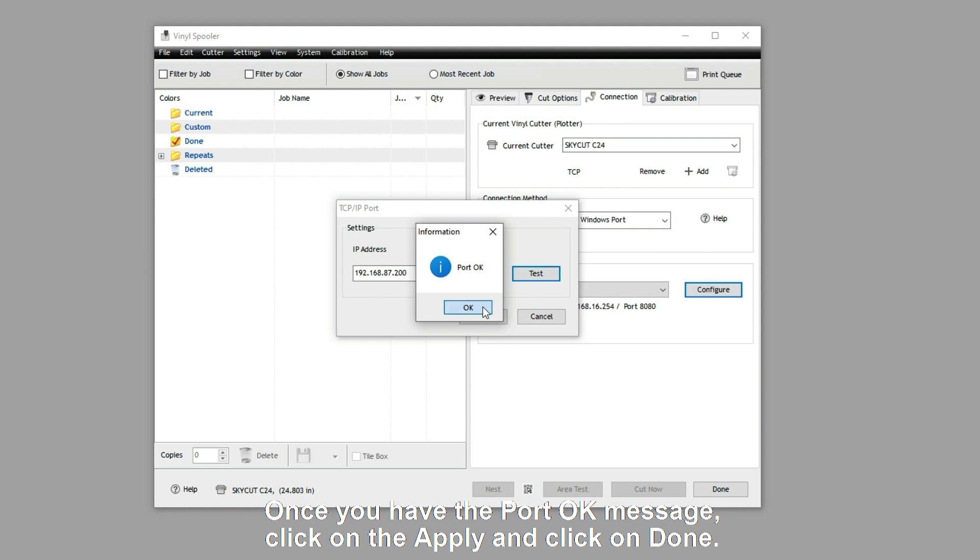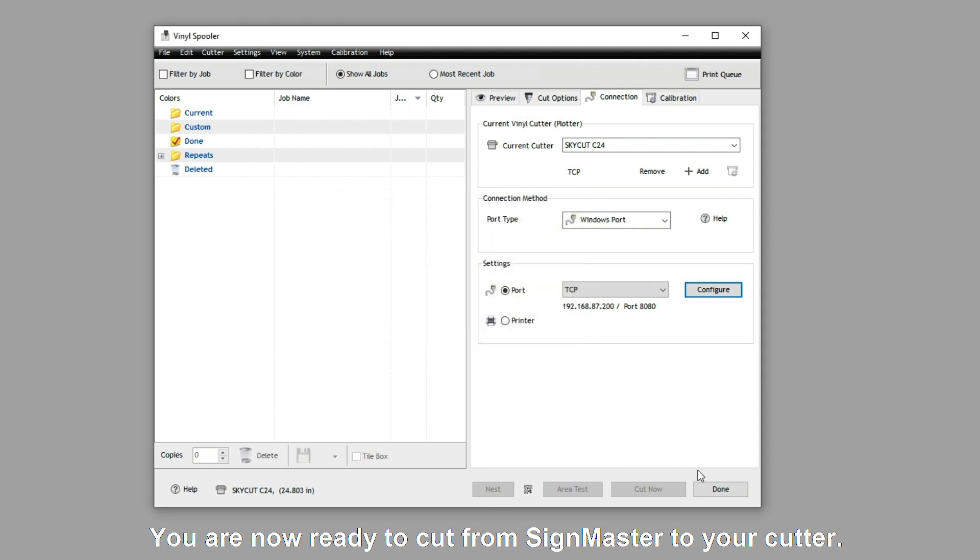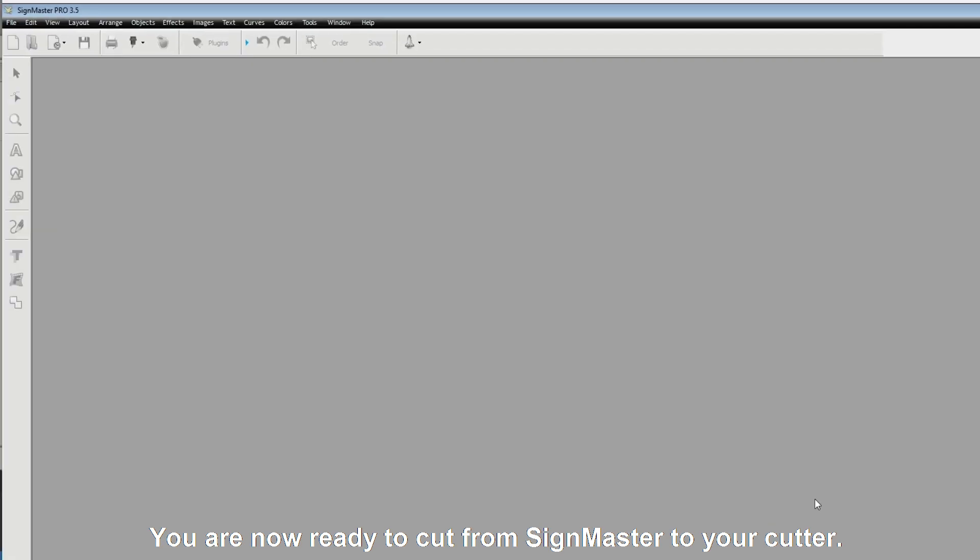Once you have the Port OK message, click on the Apply and click on Done. You are now ready to cut from SineMaster to your cutter.